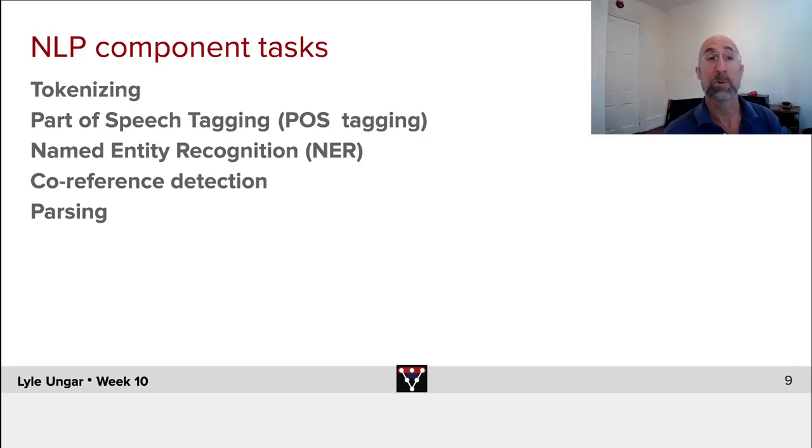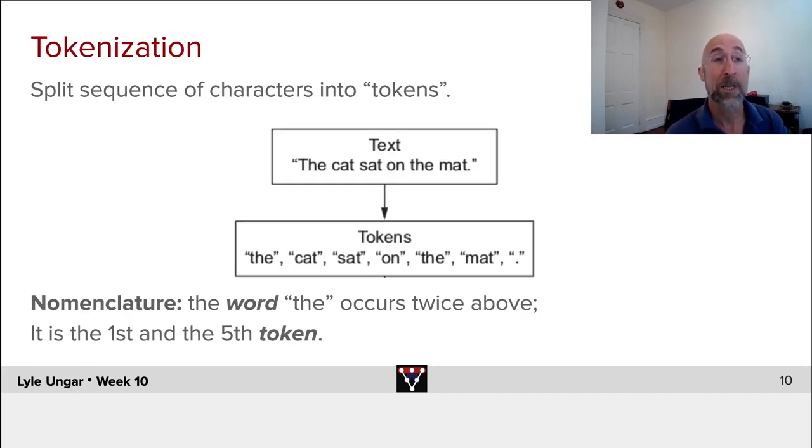Classic natural language processing broke things down using linguistics. Broke words, text, characters into tokens. Labeled tokens with parts of speech: nouns, verbs, pronouns. Recognized named entities: people, places, things, and did co-reference and parsing, which we'll all see in a second. Many of these are not used in deep learning.